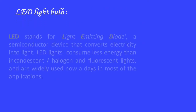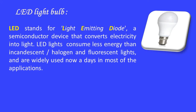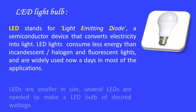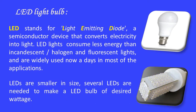LED light bulbs — LED stands for light-emitting diode — are a semiconductor device that converts electricity into light. LED lights consume less energy than incandescent, halogen, and fluorescent lights and are widely used nowadays in most applications. LEDs are smaller in size, so several LEDs are needed to make an LED bulb of the desired voltage.